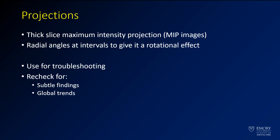As part of almost every MR angiogram, you're going to have some projectional images. These are thick-slice maximum intensity projection images that the technologists have created to give you a general overview of the vessels. Many times certain vessels will be cut out so you can see only the anterior circulation or the posterior circulation at one time. These will be projected at radial angles to give a rotational effect as you scroll through. I tend to use these for troubleshooting — I'll recheck for subtle findings, for example a subtle aneurysm that I missed, and also look for global trends such as whether one cerebral hemisphere is less perfused than the other.